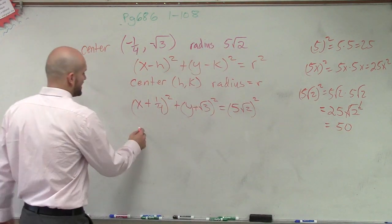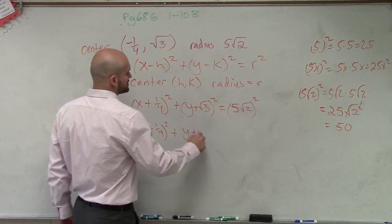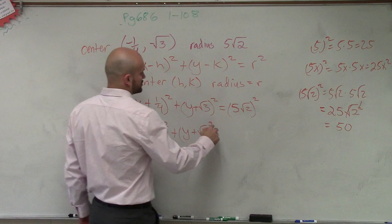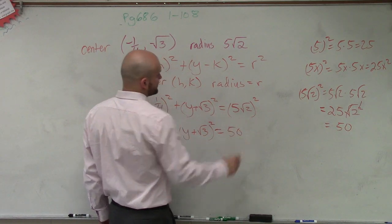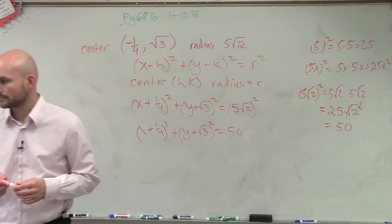So therefore, my final answer is x plus one fourth squared plus y the square root of 3 squared equals 50. Final answer.